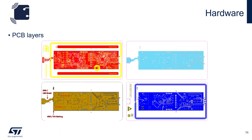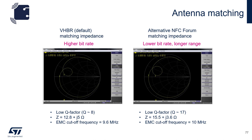The Discovery Board is a four-layer PCB with signal on top, ground, power, and signal on the bottom plane. There are two matchings available. The default is for very high bitrate, where the Q factor has been lowered to 8, the matching impedance has been set to 12.8 ohms, and the EMC cutoff filter is set to 9.6 megahertz.